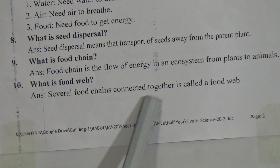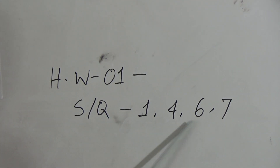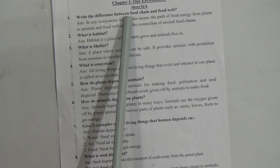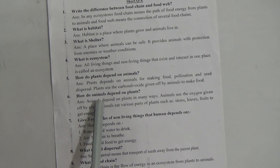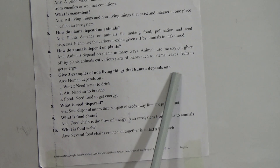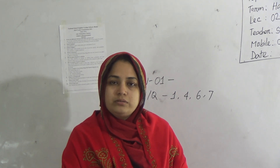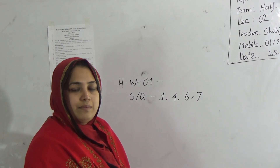Today's SW number 1 — short question numbers 1, 4, 6, and 7 are your SW. Short question number 1: Write the differences between food chain and food web. Short question number 4: What is ecosystem? Short question number 6: How do animals depend on plants? Short question number 7: Give 3 examples of non-living things that humans depend on. Submit your SW on Saturday.